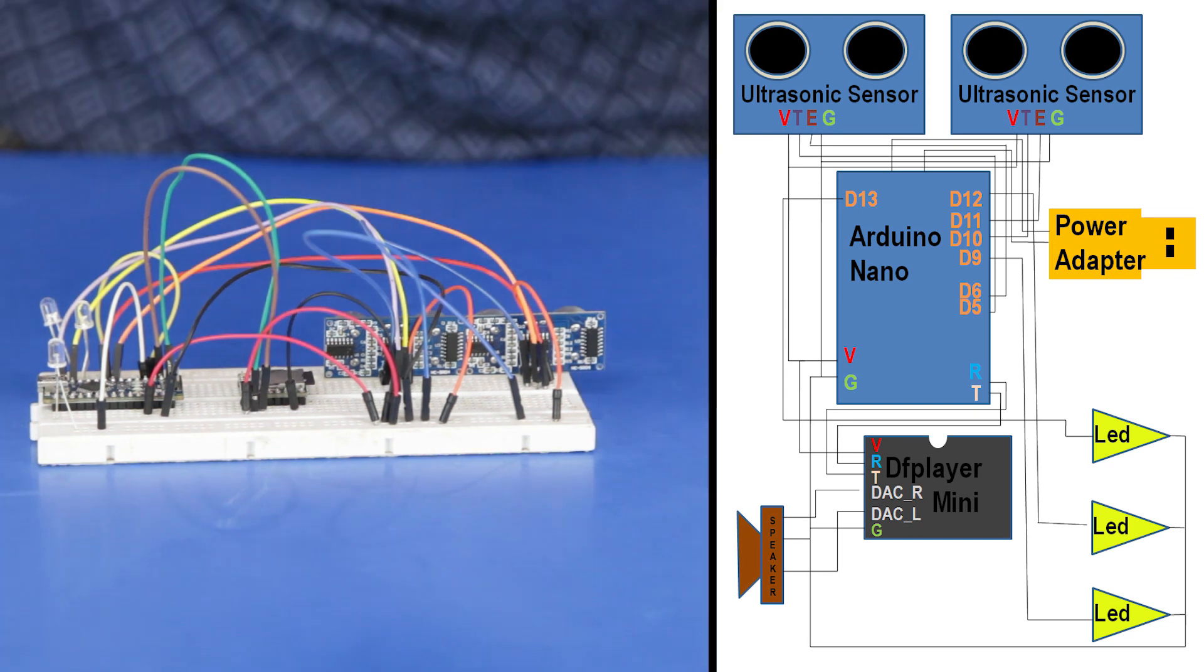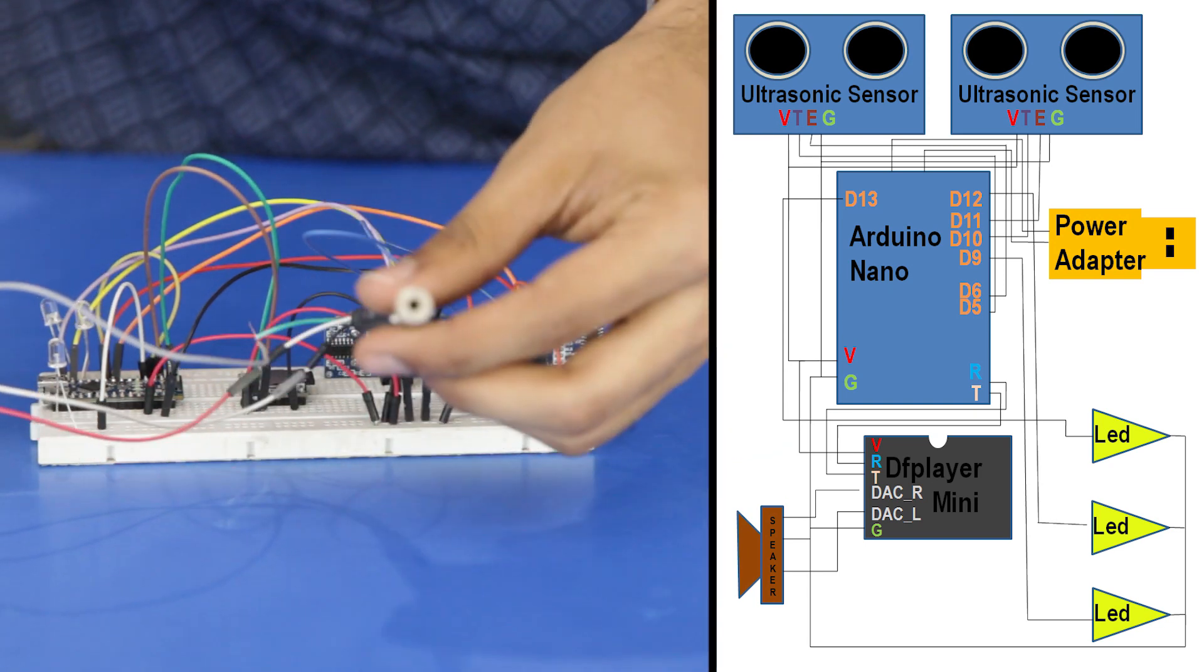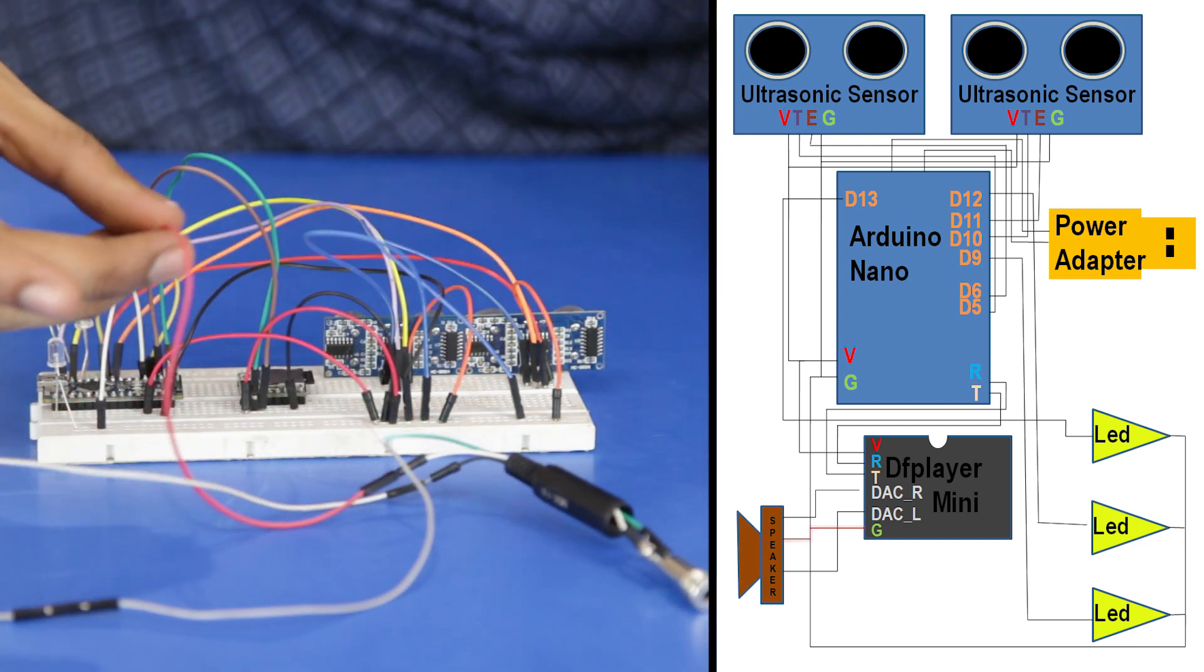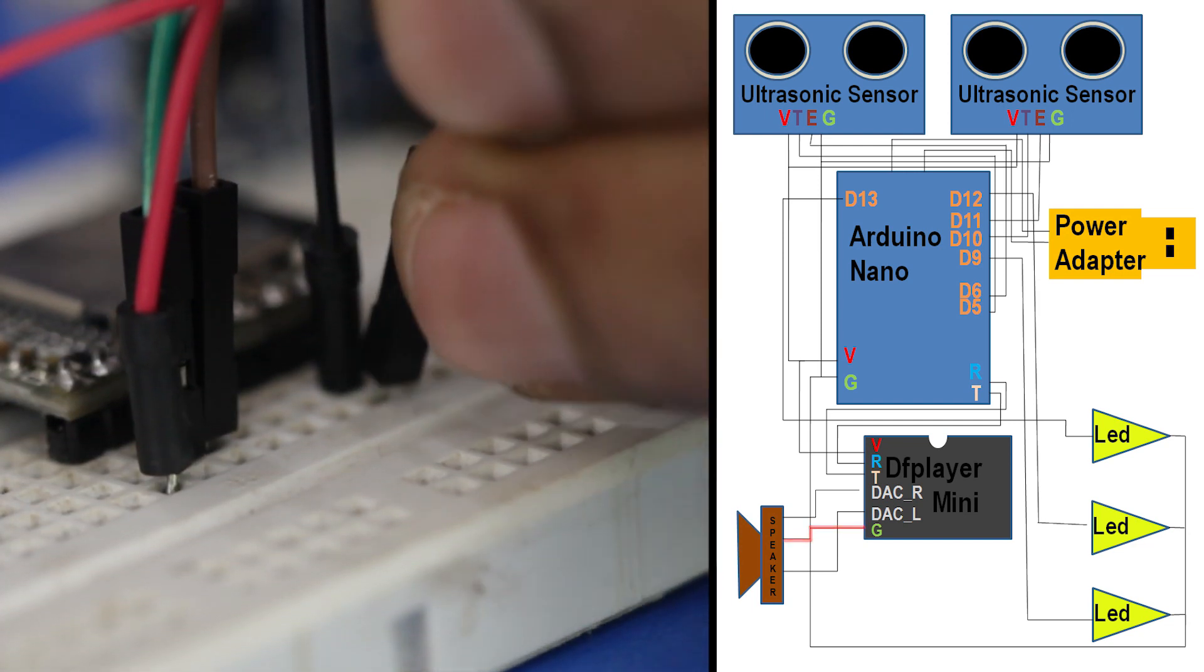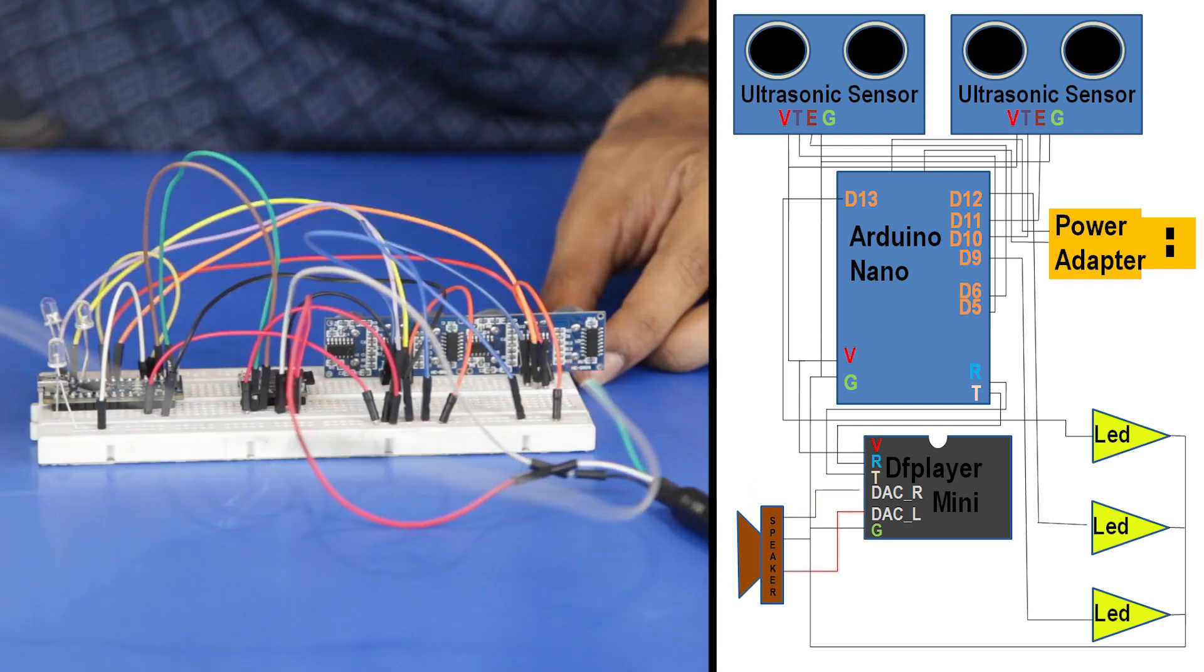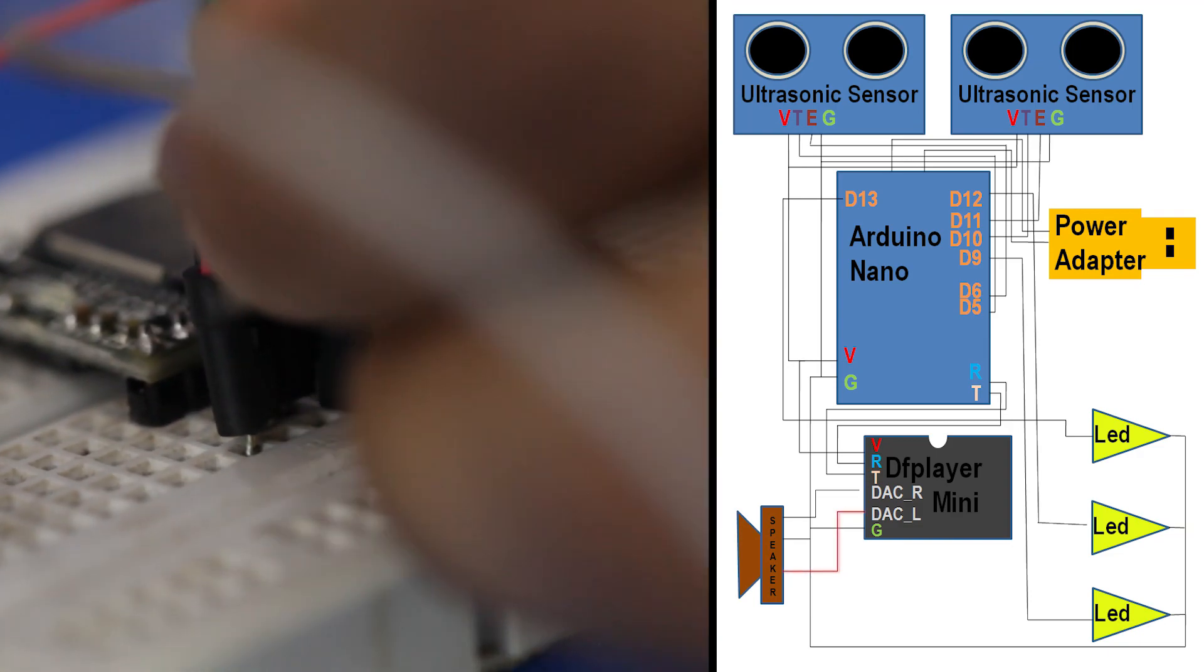Take a 3.5 mm jack female and connect three wires for ground, left and right terminals. Connect the ground wire to the ground pin of the player. The two remaining wires are connected to DAC-R and DAC-L of the player.